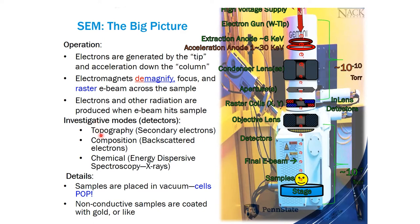We're going to look at topographical information — the features on the surface — and also chemistry and composition. Normally with an optical microscope we get a bird's eye top view. With nano characterization we'll understand what the sample is made of. Also note that these techniques take place in vacuum, though I'll show some new features where vacuum may not be needed at all. Pressure is measured in Torr.